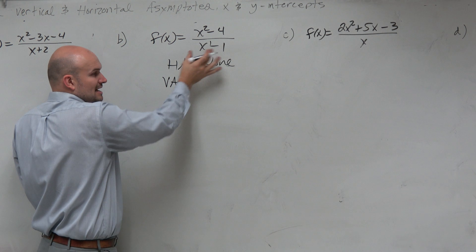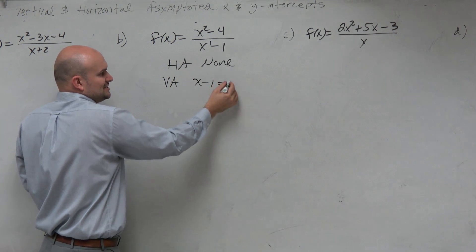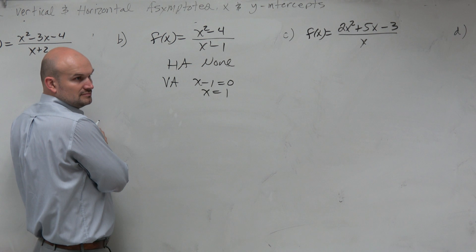Vertical asymptote: set the denominator equal to 0. I can't get anything easier than this, right? x = 1.